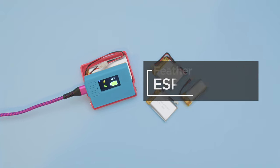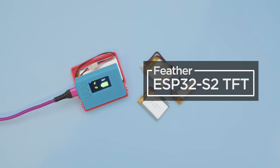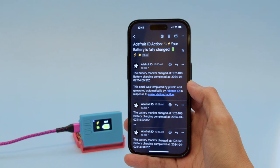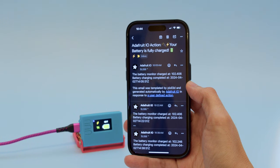For many battery-powered IoT projects, you may want to be alerted when the battery is charged or almost empty. You can use Adafruit.io actions to receive an SMS text or email notification.